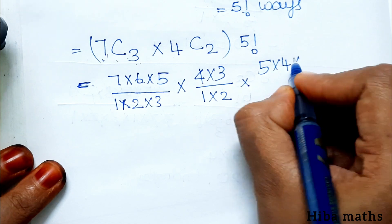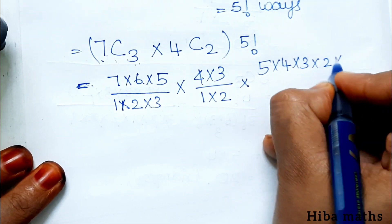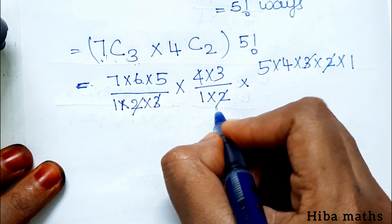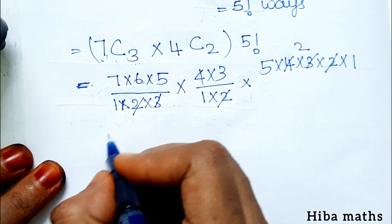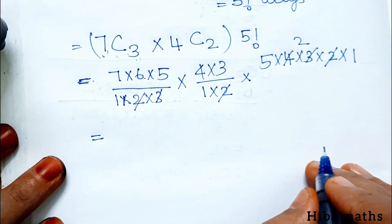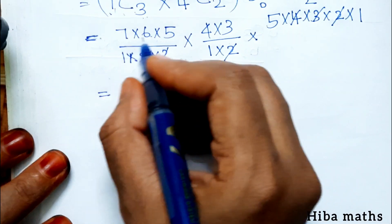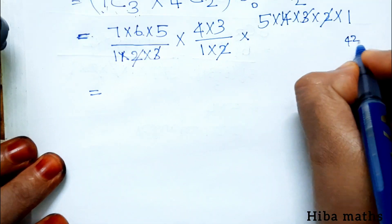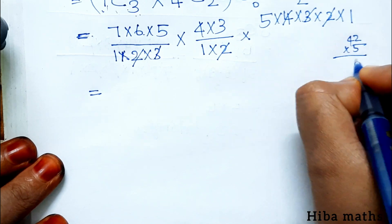Now we cancel: 2, 3, 2, 3 cancel, 2 one time, 2 two times. Now we multiply the numbers: 7, 6 are 42, 42 into 5. 42 into 5, 5 twos are 10, balance 120 and 21.